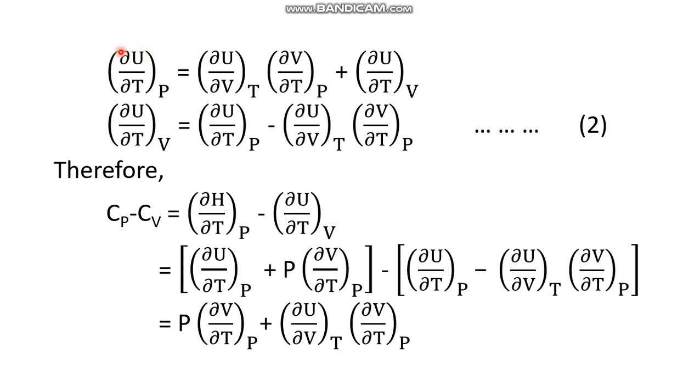So del U by del T at constant V is here, then equals del U by del T at constant P minus this term, which is the product of two different dimensions: del U by del V at constant T times del V by del T at constant P. This way we get equation number two. Here in equation two we get the expression of del U del T at constant V, and in equation one we got del H del T at constant P. We know that del H del T at constant P is Cp, and del U del T at constant V is Cv.